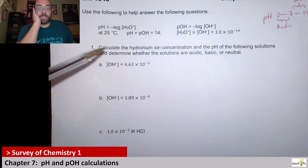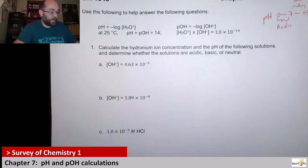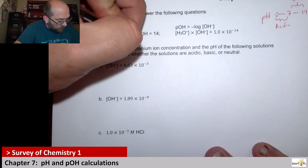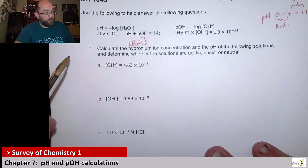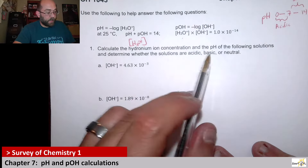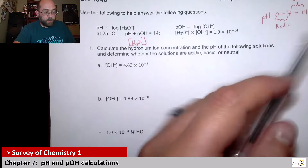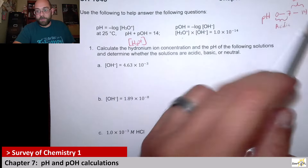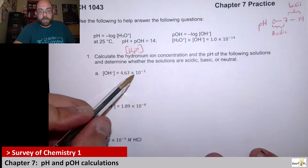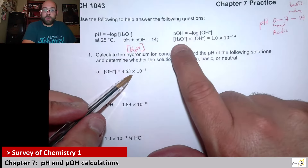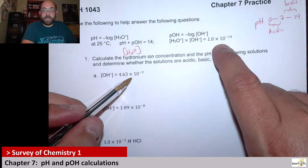Here it wants us to calculate the hydronium ion concentration — that's H3O⁺ — and the pH for the following solutions, then determine if they're acidic, basic, or neutral. The pH will tell us if it's below seven or above seven. From here, we have our hydroxide concentration. Notice that hydronium times hydroxide equals 1×10⁻¹⁴.